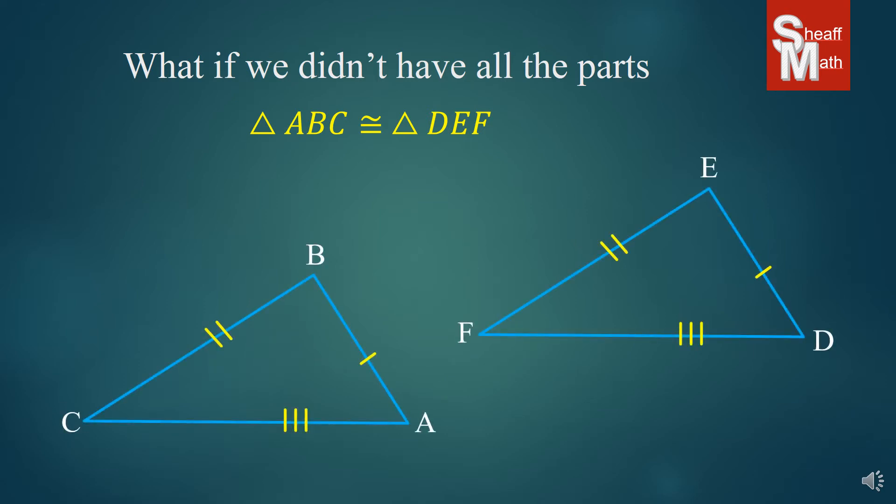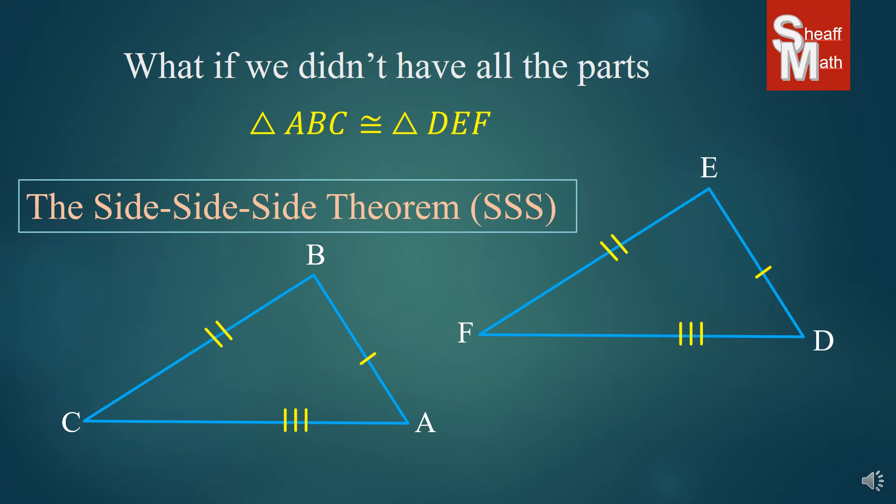So, looking back at our two triangles, given that we have three corresponding and congruent sides, this tells us that we have congruency. And we call this the side-side-side theorem, also known as SSS. And so, you can use this now to prove that two triangles are congruent.